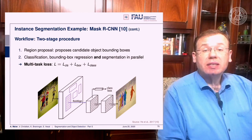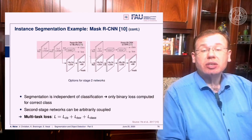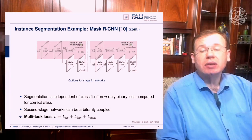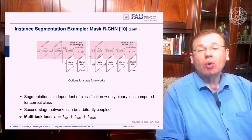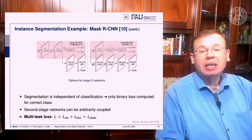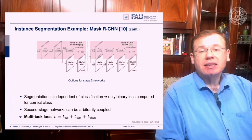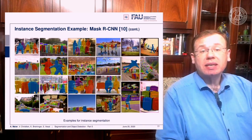Let's look in more detail at the two-stage procedure. You have two different options for two-stage networks. You can have a joint branch working on the ROIs that splits at a later stage into the segmentation mask and the class and bounding box prediction. Or you can split early and run into separate networks. In both versions, you have this multitask loss that combines the pixel-wise segmentation loss, the box loss, and the class loss.